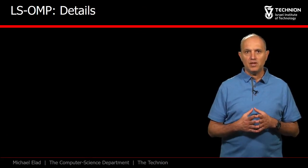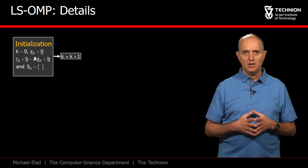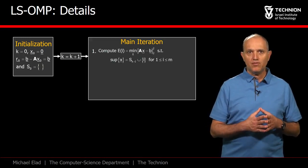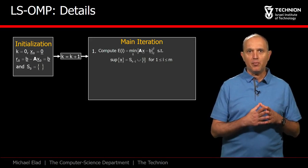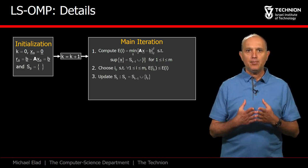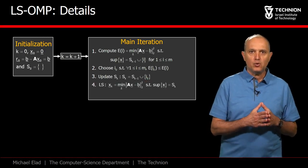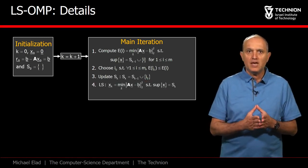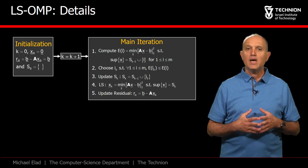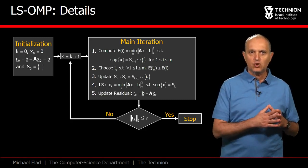Here is a detailed description of the Least Squares OMP. We initialize with an empty support and set k to be 0. Increase k by 1 and apply this series of steps: first, solve these m least squares problems and get an error per each; then choose the index that led to the smallest error, and update the support by adding this atom. At this stage, we update x for the new support, but this computation has already been done in the sweep stage, so we simply take the solution we got. Finally, we update the residual, done only because we might use it for stopping the algorithm.